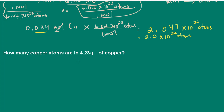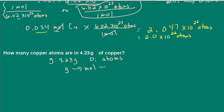How many copper atoms are in 4.23 grams of copper? This one — we're not starting off with moles, we're starting with grams. In just about all of these types of problems, if you're given something in grams, you're going to need to convert to moles. I'm given 4.23 grams and my desired unit is atoms. I can't go directly from grams to atoms, but I can go from grams to moles and then from moles to atoms — so we'll need two conversion factors.